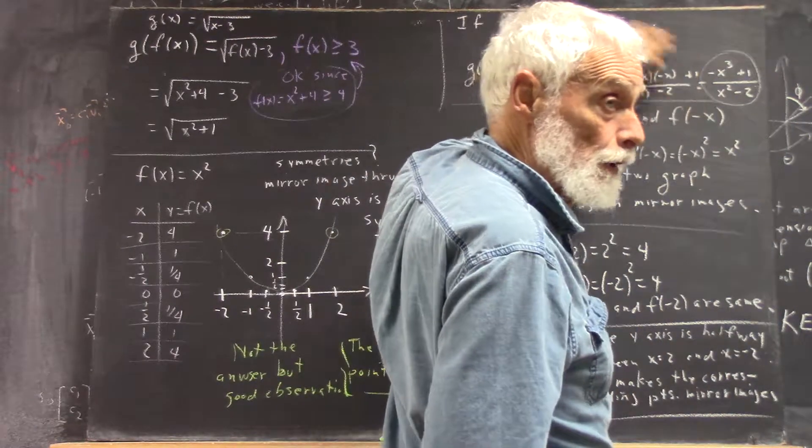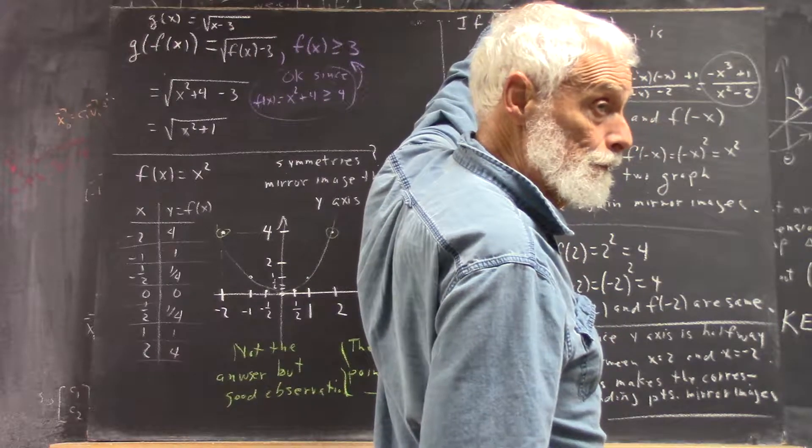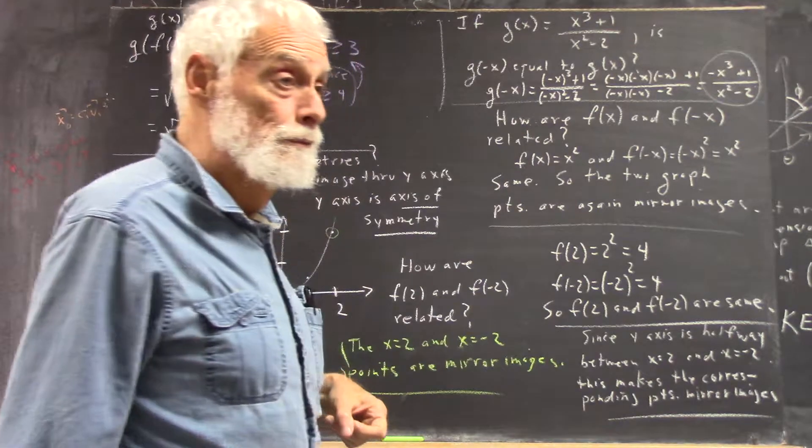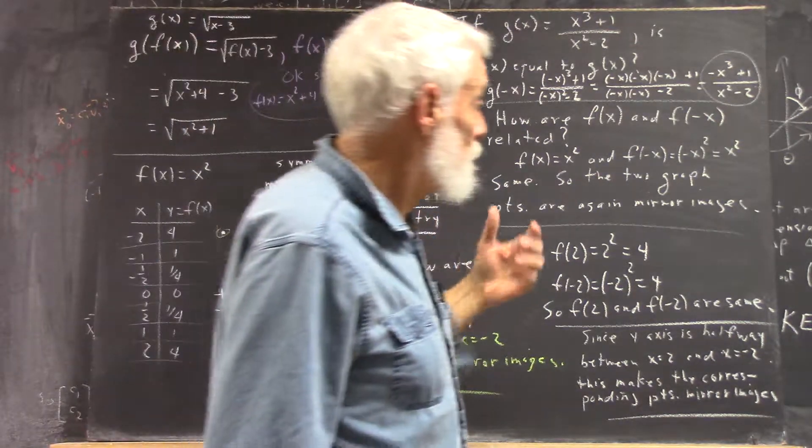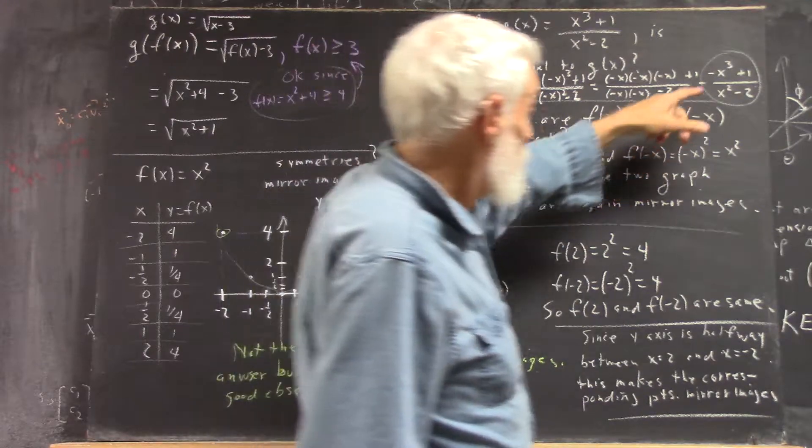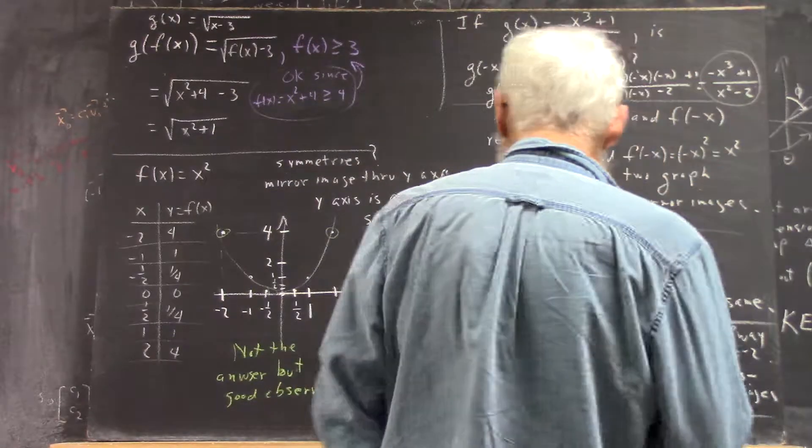Now, here's g of negative x, and here's g of x. Are they the same? Sure. Oh, no they're not. Anything different down here? Oh, the x cubed is negative. Yeah, I got a negative there.